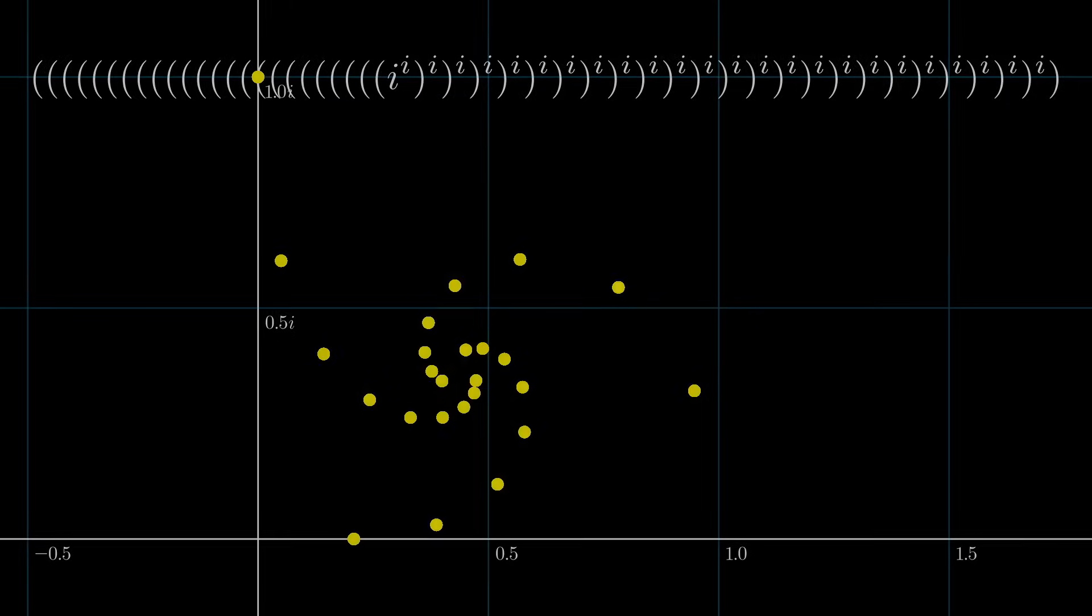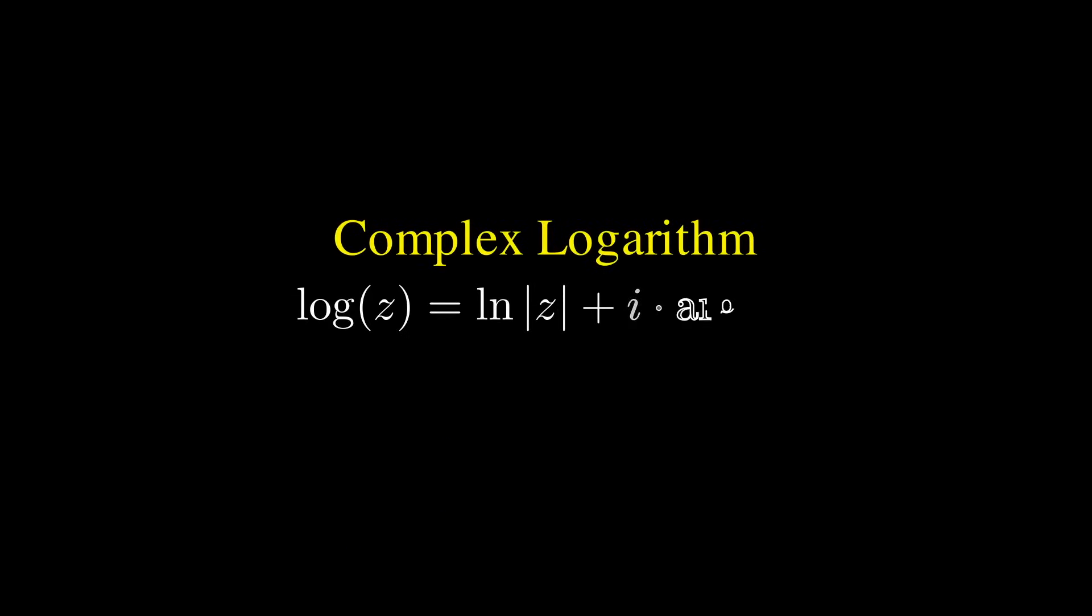The first tool is the complex logarithm. The complex logarithm is basically the extension of the natural logarithm to non-zero complex numbers. Working with this function can sometimes be annoying because it's multi-valued for those of you who know what I'm talking about, but in this video, we're just using the principal value, and that's all I'll say about it here. If you want to learn more about the complex logarithm, I have a video on it you can check out later.